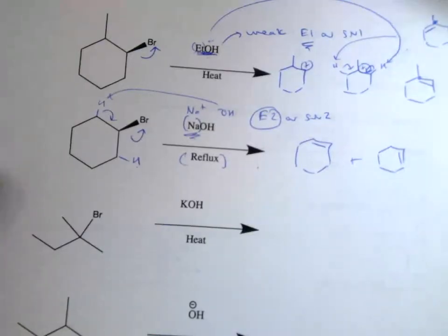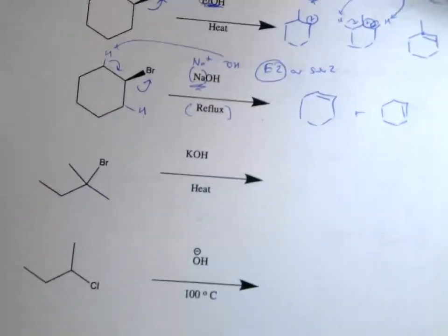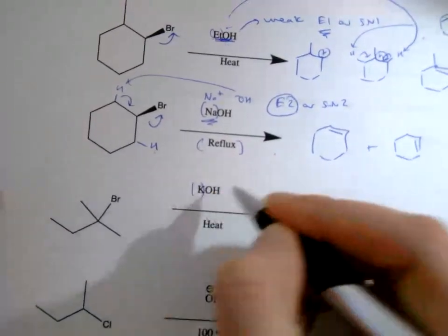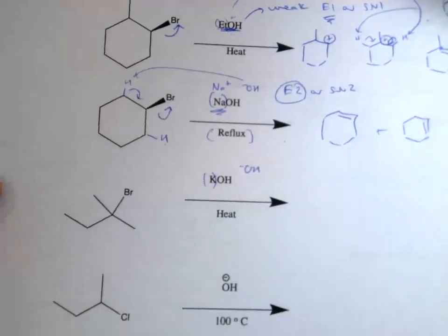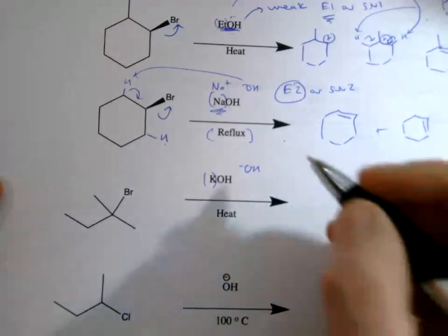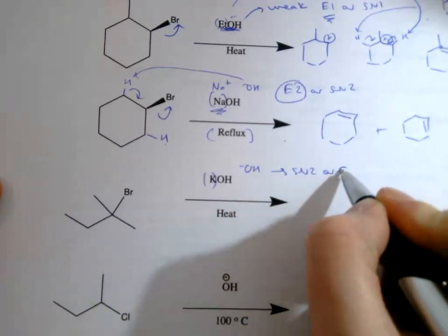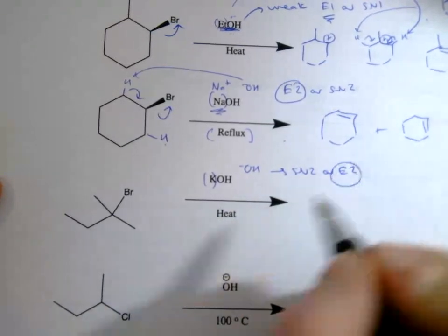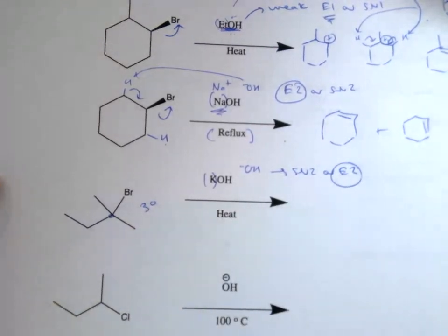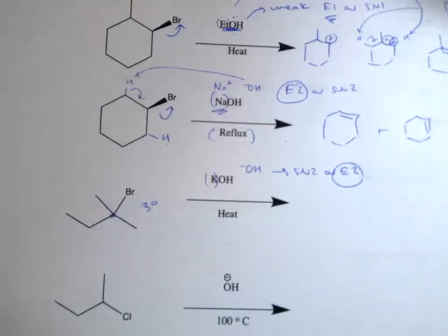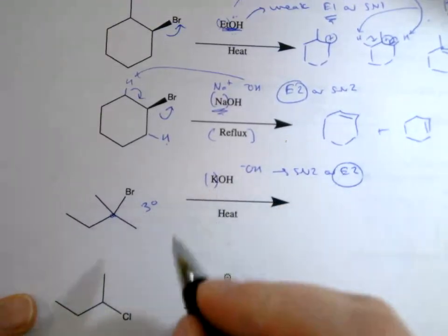Okay, so this is again a metal counter ion, so OH minus is a strong nucleophile. It's going to favor SN2 or E2, and with heat it's definitely going to favor E2. This is a tertiary leaving group, so with the tertiary leaving group it can only do E2.